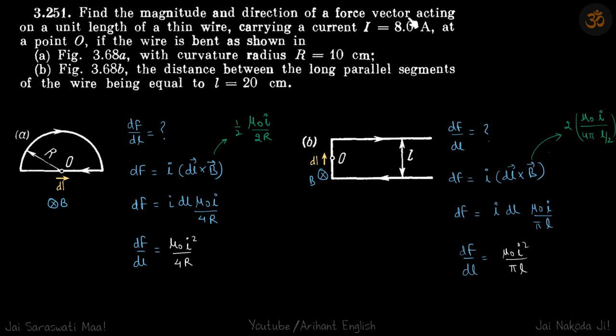Find the magnitude and direction of a force vector acting on a unit length of a thin wire. Force acting per unit length, df by dl, we are supposed to find for these two cases where the current is given, and we are supposed to find this df by dl at the point O.